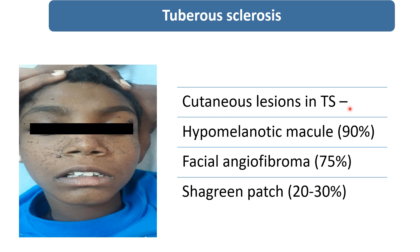Other cutaneous lesions in tuberous sclerosis: in 90% of patients, hypomelanotic macules are present over the trunk and extremities. These are ash leaf-like hypomelanotic macular lesions. 20% of patients are also having shagreen patches in the lumbosacral region. These are the elevated plaque-like lesions, present in 20 to 30% of cases.